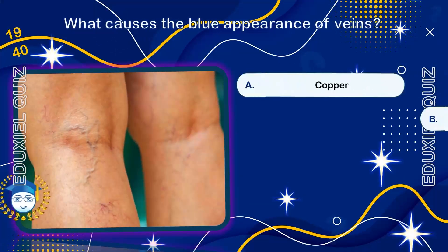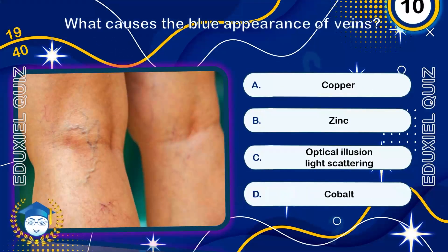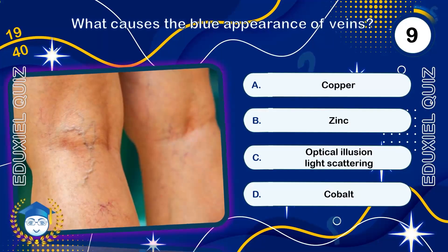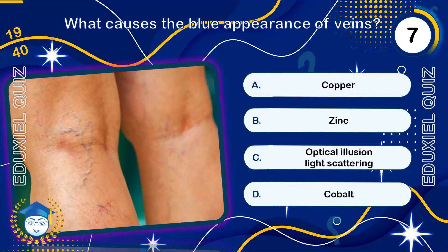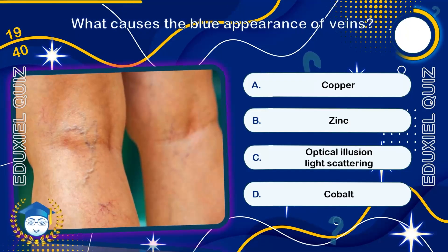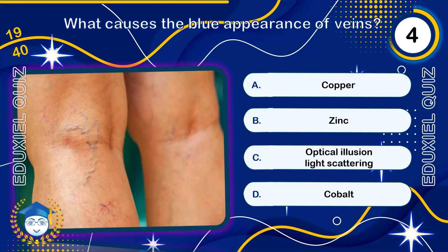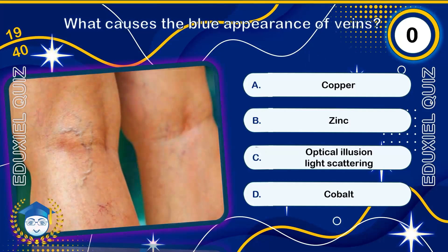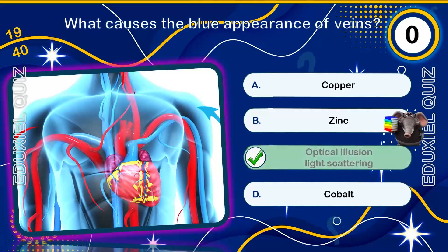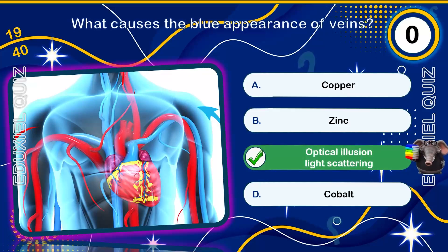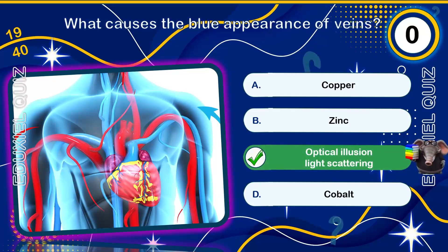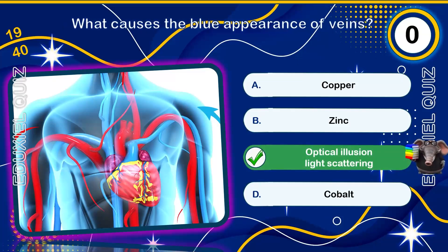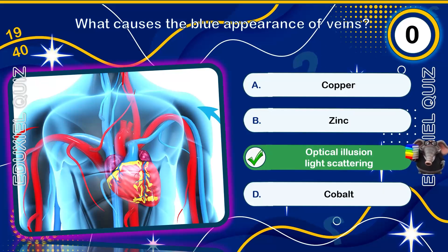What causes the blue appearance of veins? Optical illusion and light scattering. Veins appear blue due to the way light penetrates the skin and is scattered and absorbed by the deoxygenated blood and skin tissue — Rayleigh scattering.